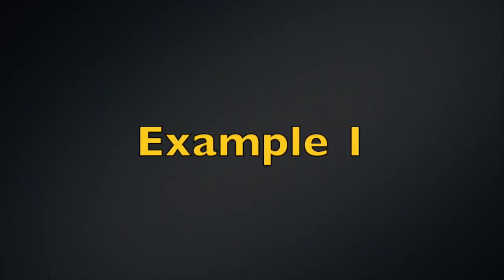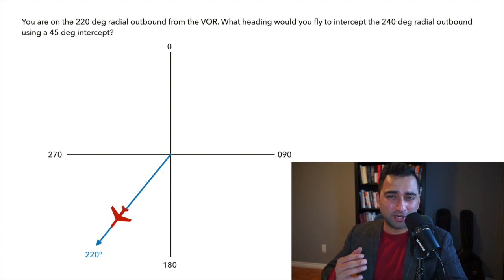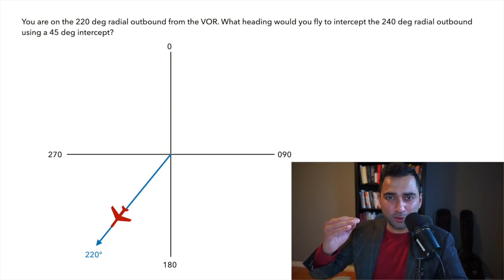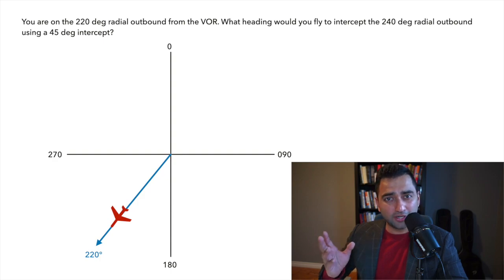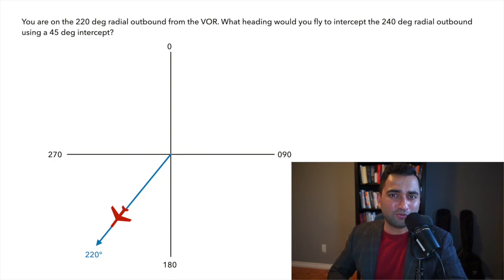The second method is to use the actual VOR indicator in the airplane itself. So let's look at two examples on how to do just that. In the first example, we are flying on the 220 degree radial outbound from the VOR, and now we want to fly on the 240 degree radial outbound from the VOR using a 45 degree intercept. What intercept heading are we going to take to get there?